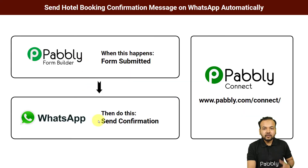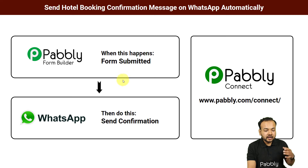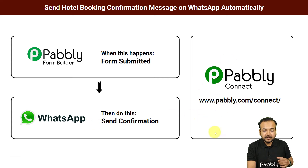This will be the flow of this automation. We are using Pably Form Builder to make a hotel booking form, and in place of this you can use any other form building application as well, like Google Forms or JotForm. As and when your customer fills this form for booking a room and submits it, a confirmation message will be delivered on their WhatsApp account automatically. To make this happen, we are using Pably Connect, which is an integration and automation tool. The best part is anyone can set up this automation without any coding skills, very easily.